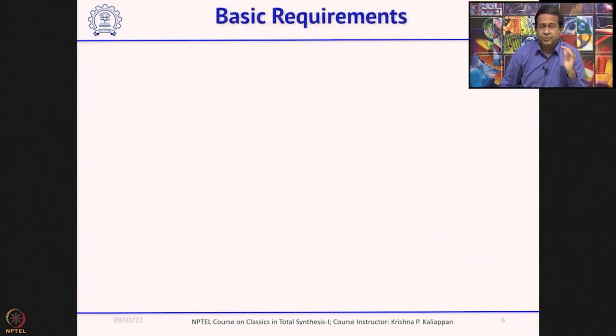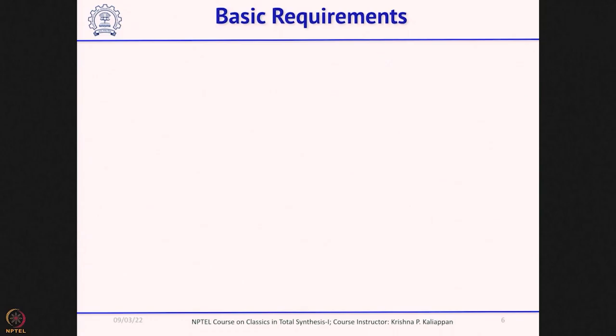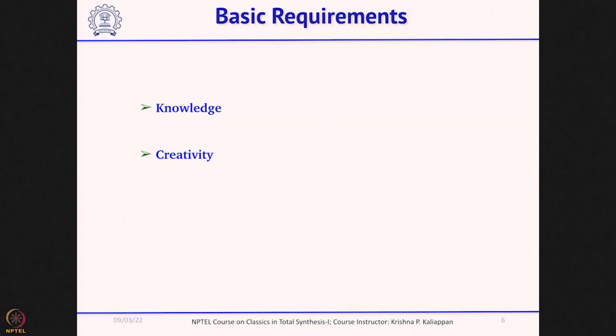Now, what are the basic requirements one should have to carry out total synthesis? First of all, the knowledge of most organic reactions at your fingertips is very important. The reason is when a particular reaction does not work, you should think about alternate reactions and alternate pathways. You should have knowledge of a wide range of reactions - then only will you be able to face failures and succeed. Knowledge of organic reactions and related things in organic chemistry is very important.